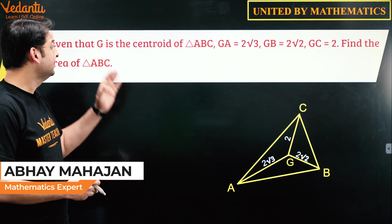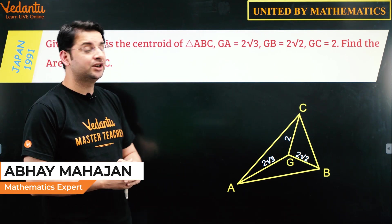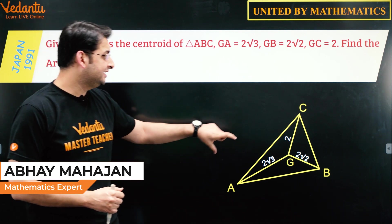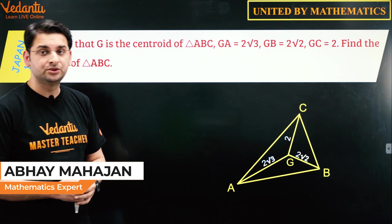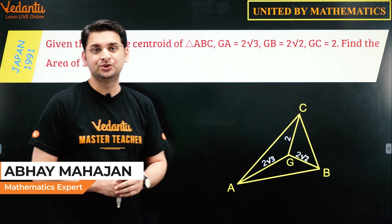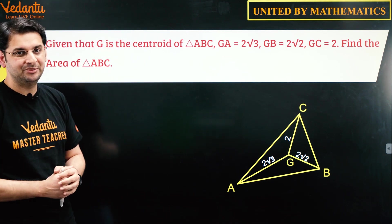The question says given that G is the centroid of triangle ABC and if GA is 2√3, GB is 2√2, and GC is 2, find the area of triangle ABC.